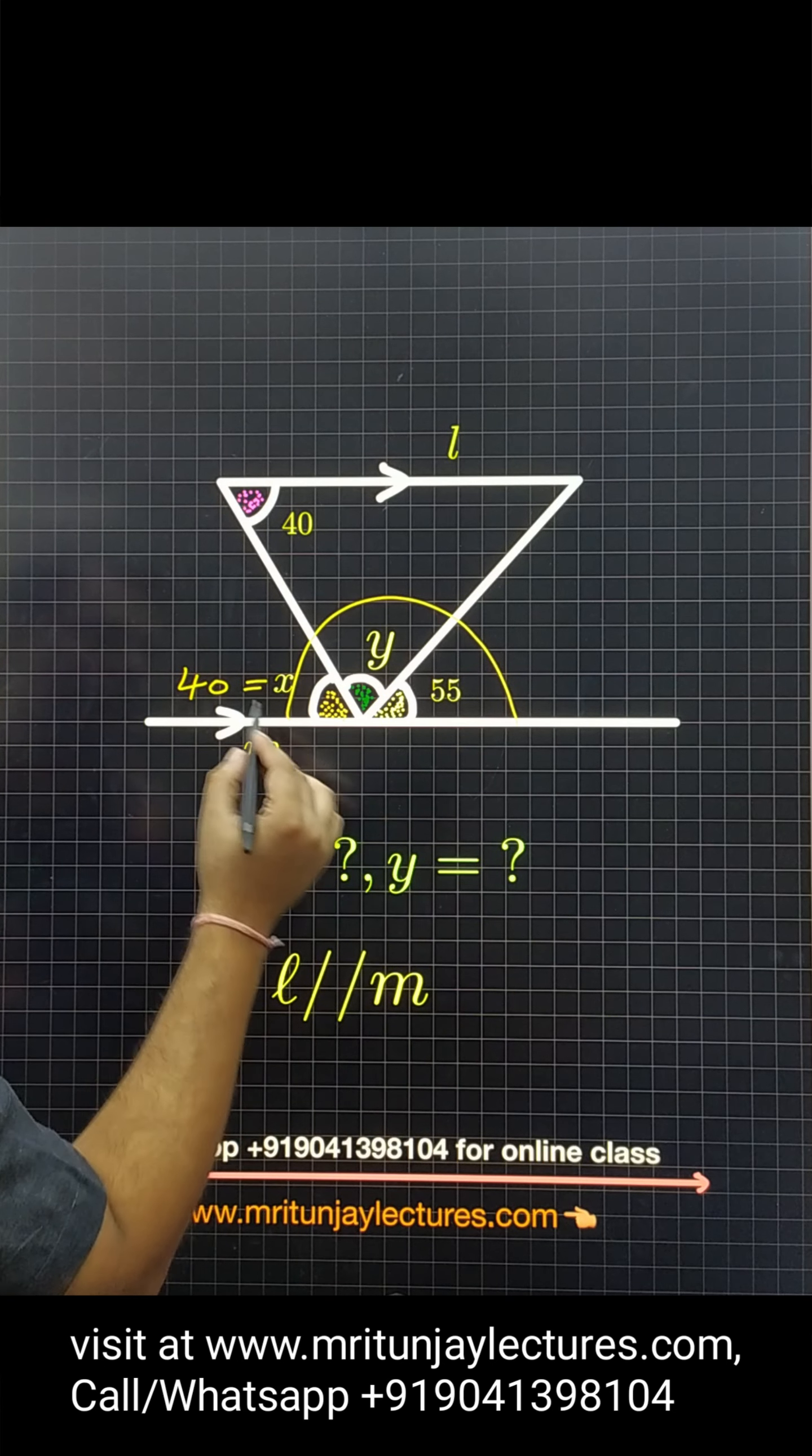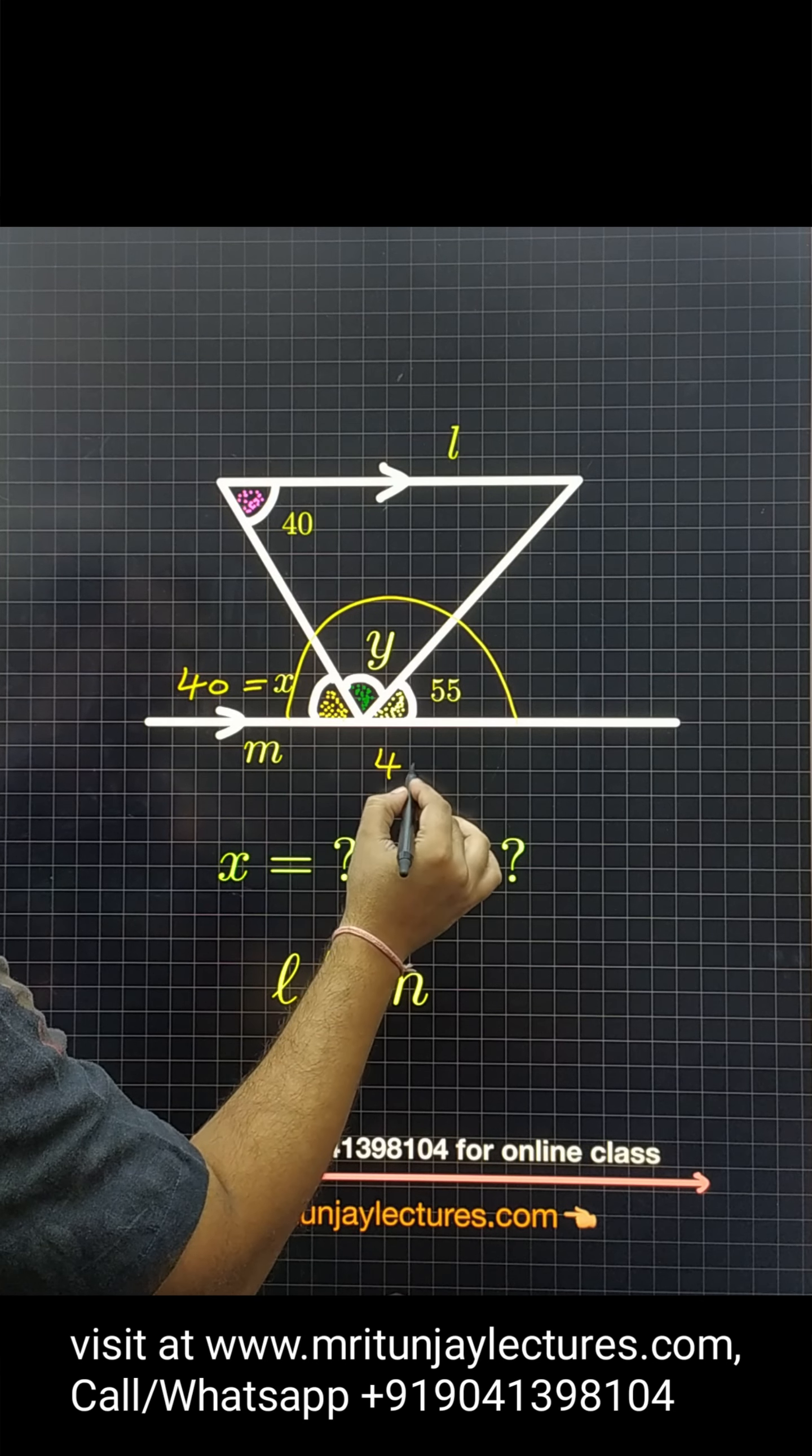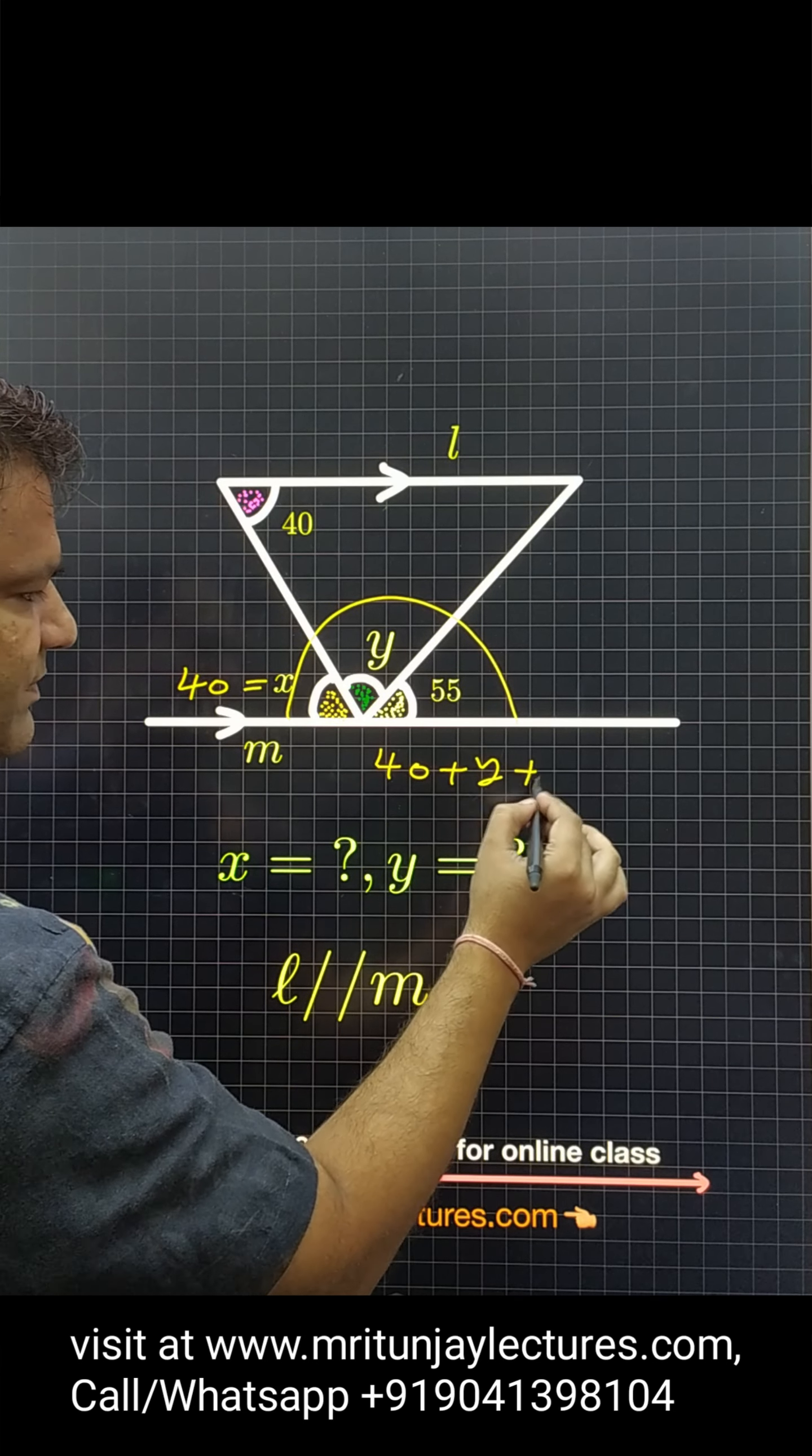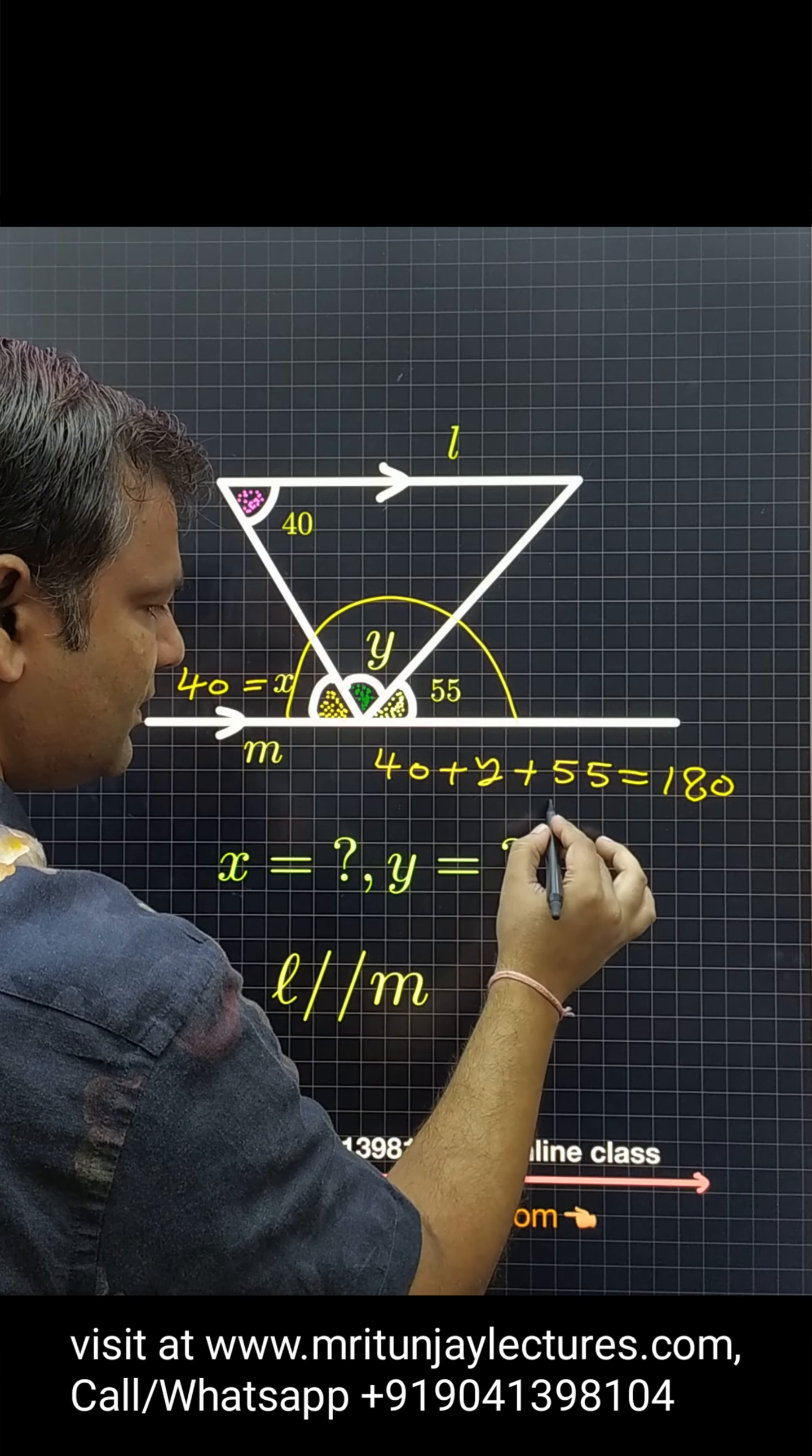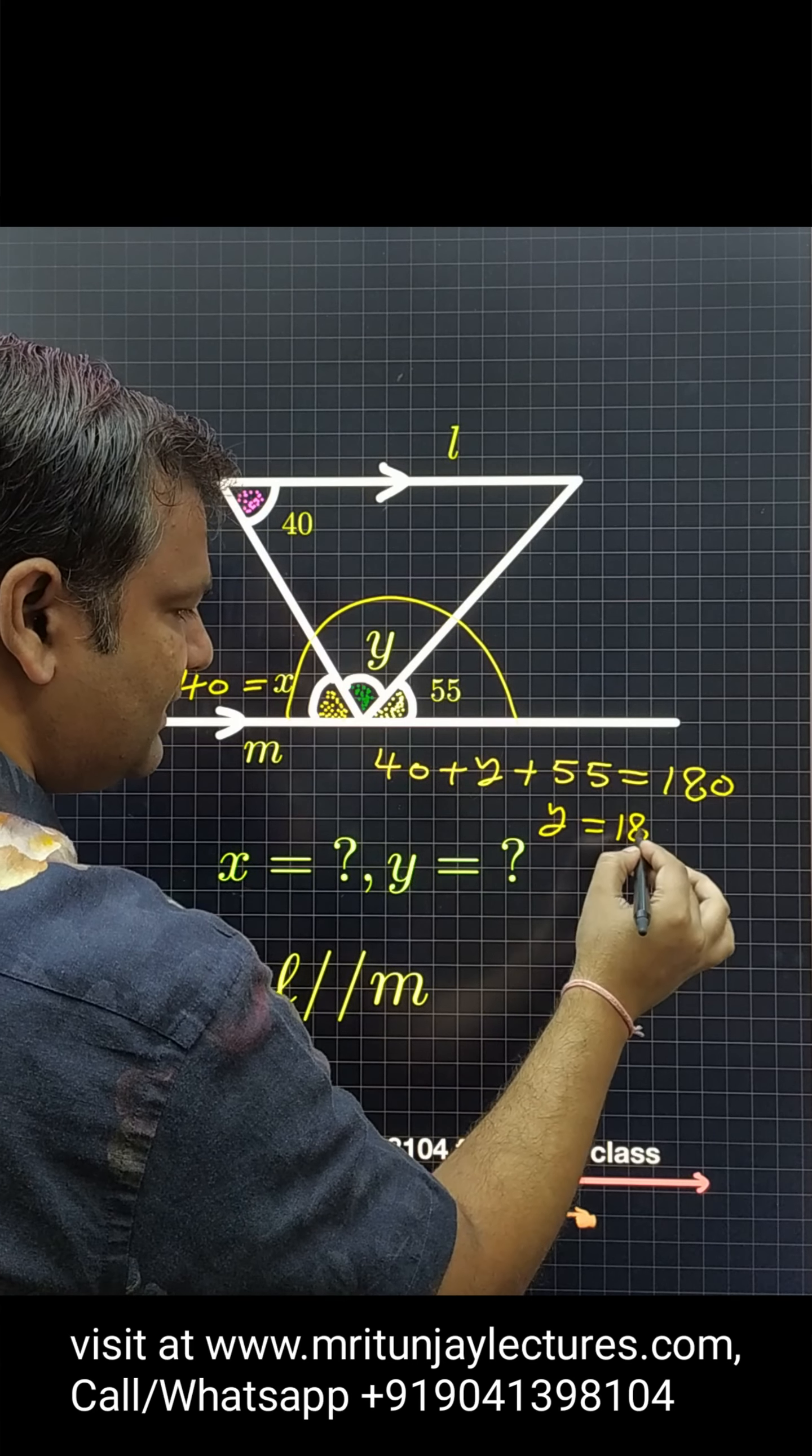So 40 plus y plus 55 is equal to how much? 180. So y is how much? 180 minus...